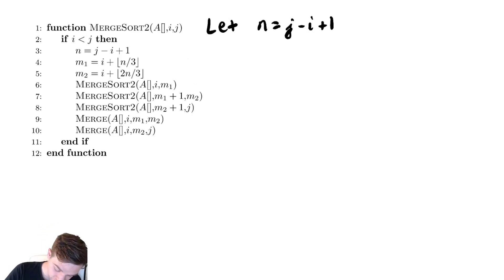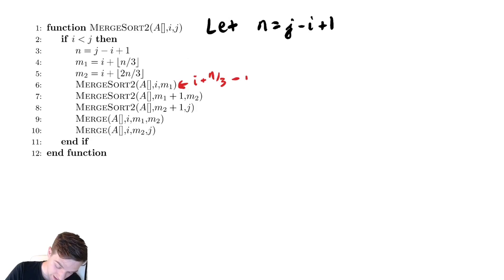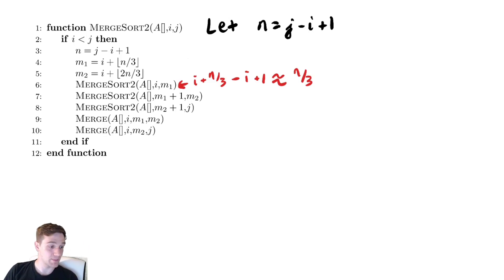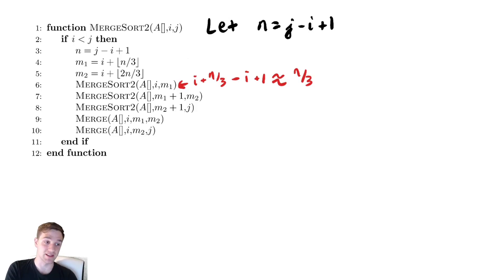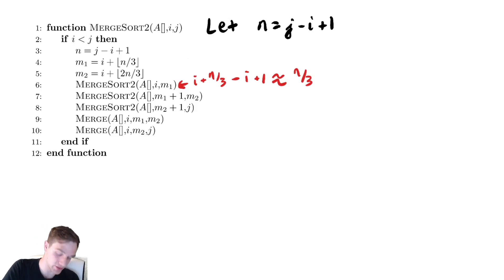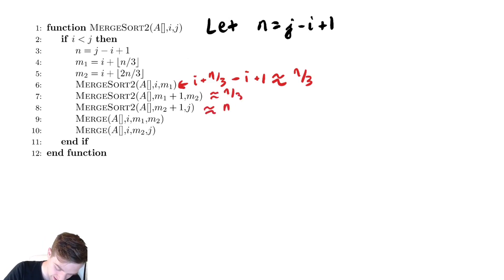For this first recursive call we have m1, which is i plus n over three, minus i plus one, which is about n over three. Skipping a bit of the algebra, we could do something similar for the next two recursive calls — again, the idea was that we're splitting into thirds. So all of these recursive calls are about size n over three.